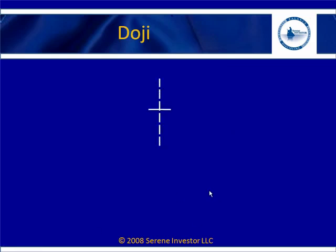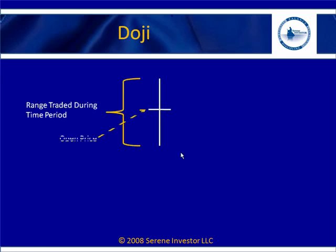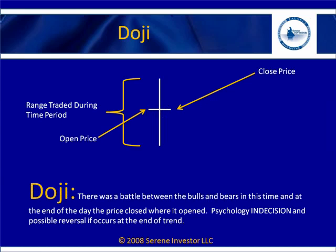Here's another type of candlestick called the doji. A doji means it opens, has the battle up and down, then closes exactly or really close to where it opened. It looks like a little plus sign, and that's called an indecision day. The range trading during the time period is what you see — the open and closing price are pretty much exactly, if not close together. I like to think of a doji as a battle where either side tried to win, but neither side won. They had a standoff and had to come back tomorrow to fight the battle again.